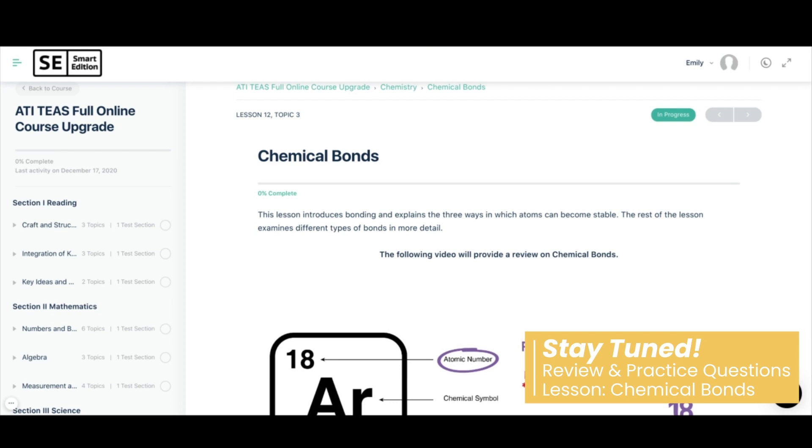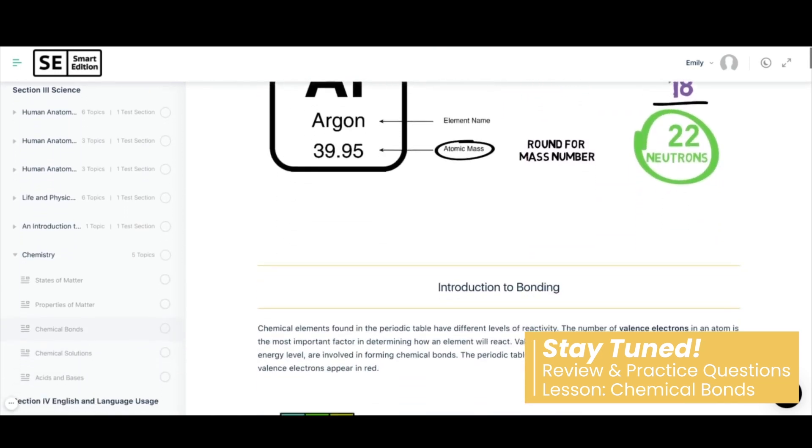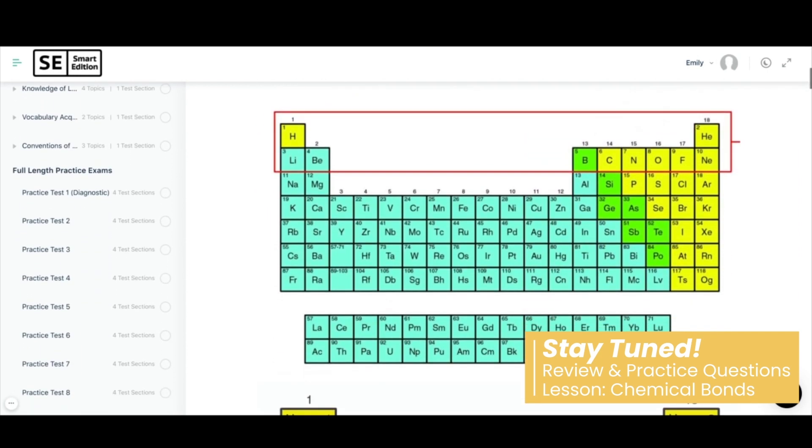So in this video, we're specifically going to go over what is bonding, three ways atoms can become stable, and the three different types of bonds. And at the end of the lesson, there's going to be a few practice test questions to test your knowledge, so stay tuned until the very end.